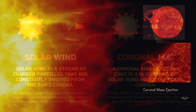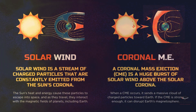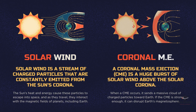Sometimes the Sun releases a massive burst of solar wind called a coronal mass ejection, or CME. A CME is a substantial expulsion of plasma and magnetic field from the solar corona. These events can propagate through interplanetary space, and if a strong enough CME heads towards Earth, it can disrupt our planet's magnetosphere, potentially affecting technology and communications.